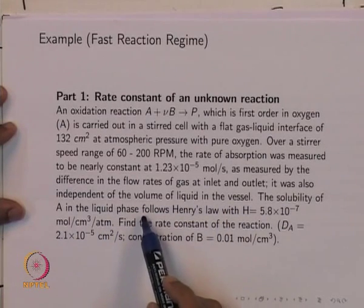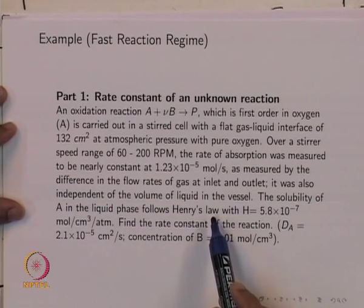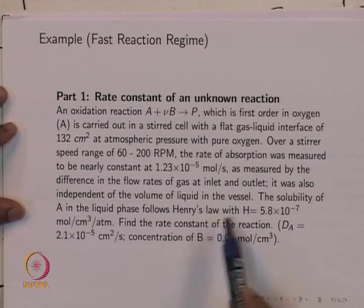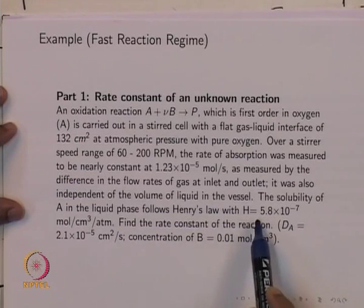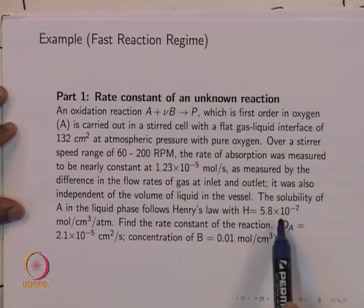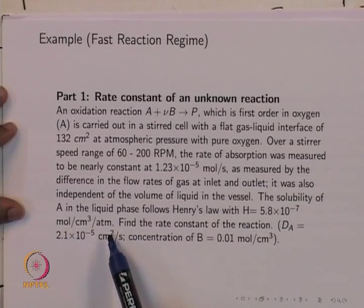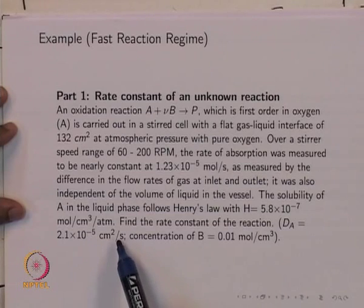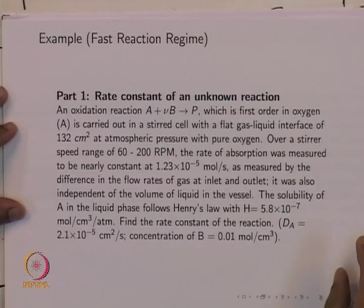The solubility of A in the liquid phase follows Henry's law, which states that for sparingly soluble gases the concentration at equilibrium is directly proportional to the partial pressure, with the proportionality constant being the Henry's law constant. For this system — oxygen dissolving in the liquid containing B — the Henry's law constant is 5.8 × 10⁻⁷ moles per cm³ per atmosphere. We need to find the rate constant of the reaction. Additional information: diffusivity D_A = 2.1 × 10⁻⁵ cm²/s and concentration of B is 0.01 moles/cm³.